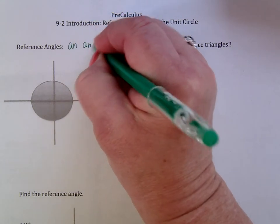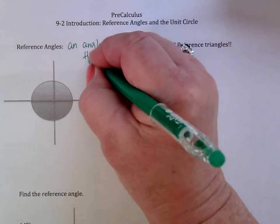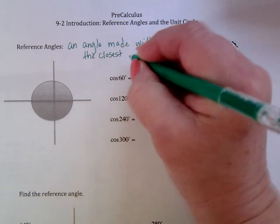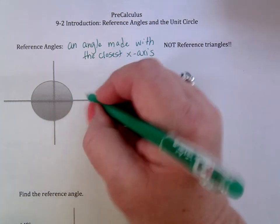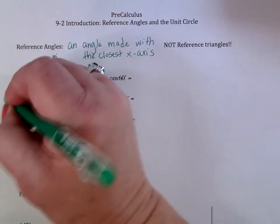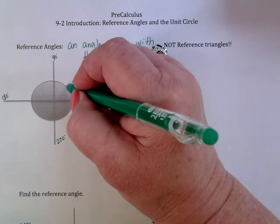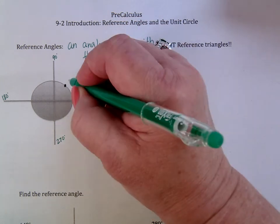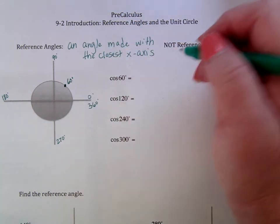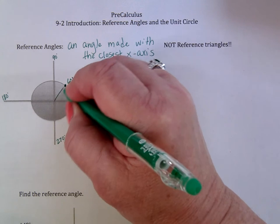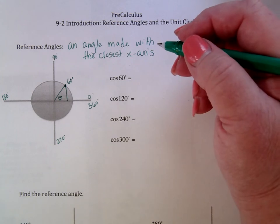A reference angle is an angle made with the closest x-axis. So if I'm at 60 degrees — this is 0, this is 90 degrees, 180 — if I'm at 60 degrees, I'm somewhere between 0 and 90 degrees. If I think about what the angle would be to the closest x-axis, that angle happens to be 60 degrees.